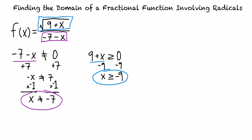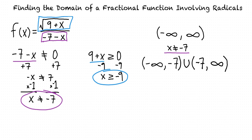Our final step is to write our domain as an interval that includes all real numbers that x can equal. The interval including all real numbers would look like negative infinity to infinity, and we're going to edit this so that it doesn't include negative 7 and only includes x values greater than or equal to negative 9. Let's rewrite it so that it doesn't include negative 7: our interval goes from negative infinity up to but not including negative 7, combined with the interval going from just above negative 7 up to positive infinity.